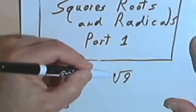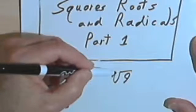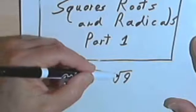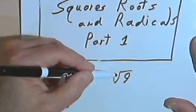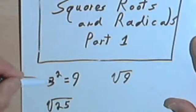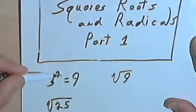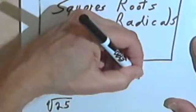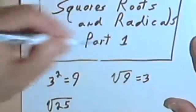What that means is the square root of 9 is going to be the same as the number that I can square, or multiply by itself, to make a 9. So since I know that 3 squared equals 9, I can say that the square root of 9 equals 3.